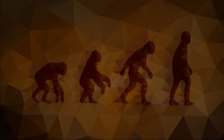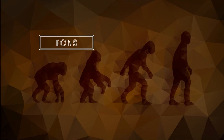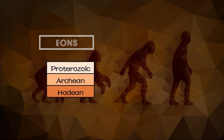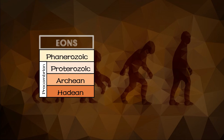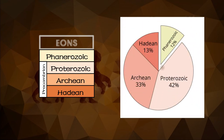Let's start with the largest interval unit into which geologic time is divided, which is the aeons. There are four geologic aeons. The first three — the Hadean, Archean, and Proterozoic aeons — are frequently lumped together and referred to as the Precambrian aeons. And lastly, we have the Phanerozoic aeon. In this chart, you can see that the Proterozoic aeon has the greatest span of time, and the least is the Phanerozoic aeon.